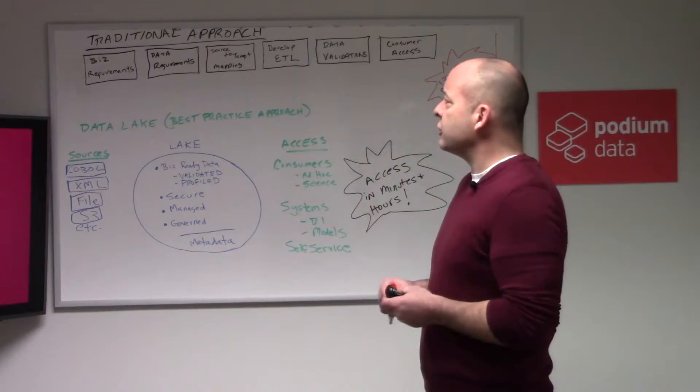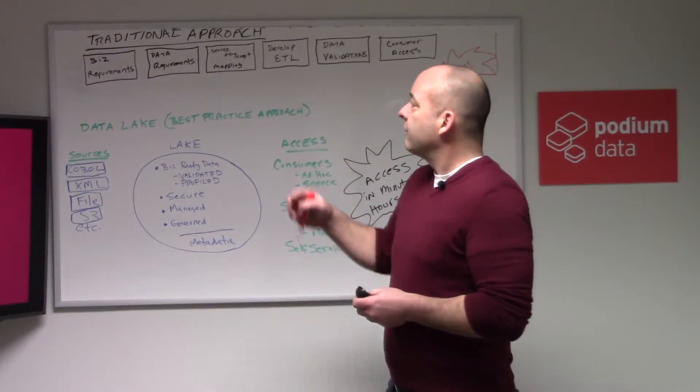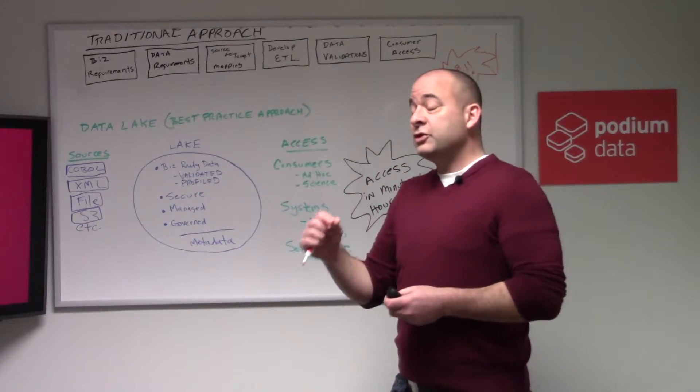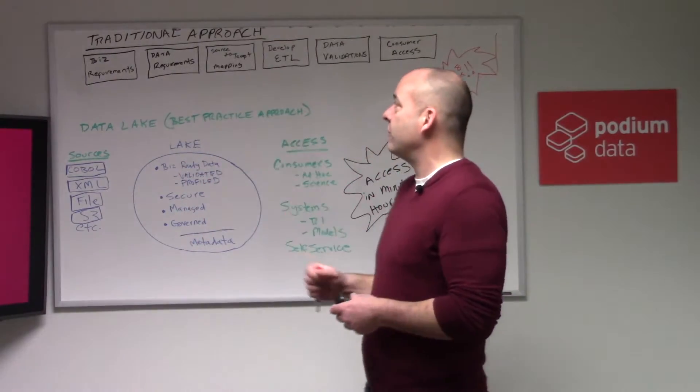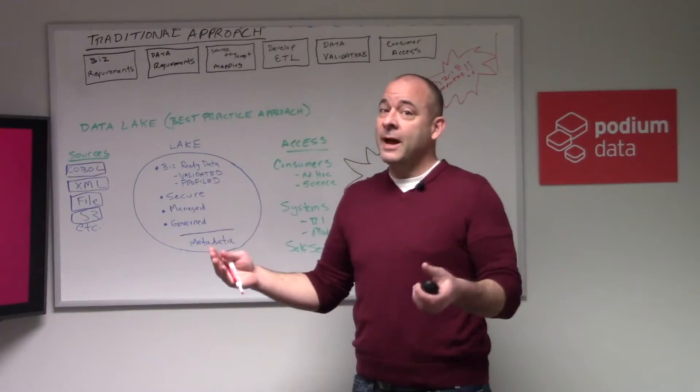In the old traditional approach, the process would be you gather business requirements. From those business requirements you figure out which data you need, or which data you think the users need to meet those business requirements. From there you actually move into what was called source to target mapping.